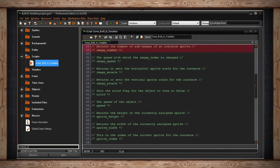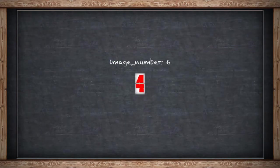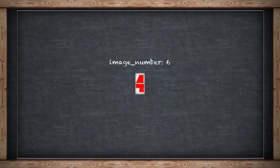Image number will return the number of sub-images of an instance sprite. For example, if your sprite has 6 sub-images — that's 0, 1, 2, 3, 4, 5 — this variable will return the number 6. This value is read-only, as you're not allowed to increase or decrease the number of sub-images inside your sprite. If you need to change the number of sub-images in your sprite, you can do that from your sprite resource folder.